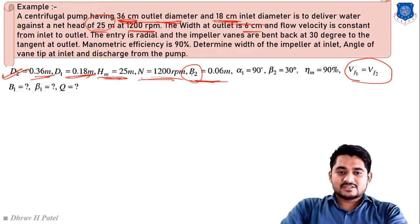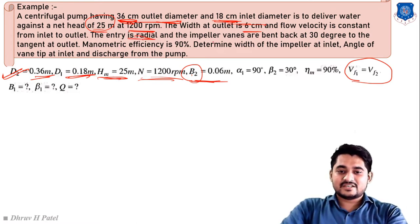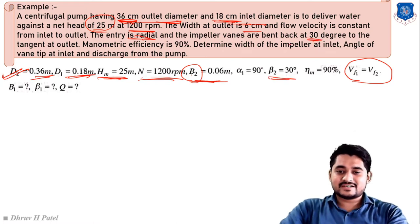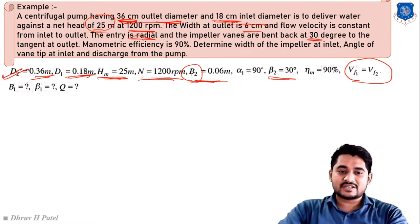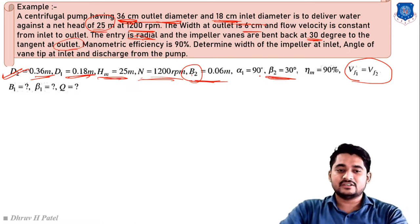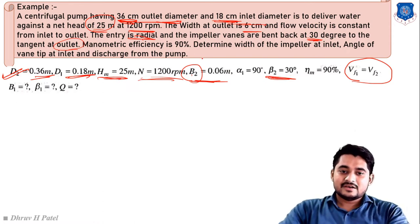The impeller vanes are bent backward at 30 degrees at the outlet, so β2 = 30°. The entry is radial, meaning α1 = 90°. Manometric efficiency η_m is given as 0.9. We need to find: width at inlet B1, discharge Q, and blade angle β1.